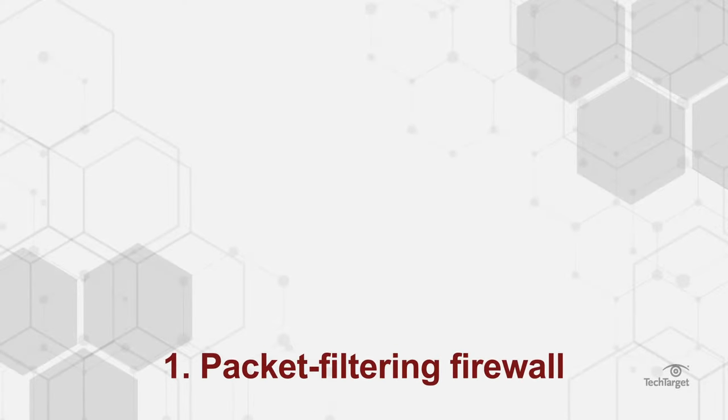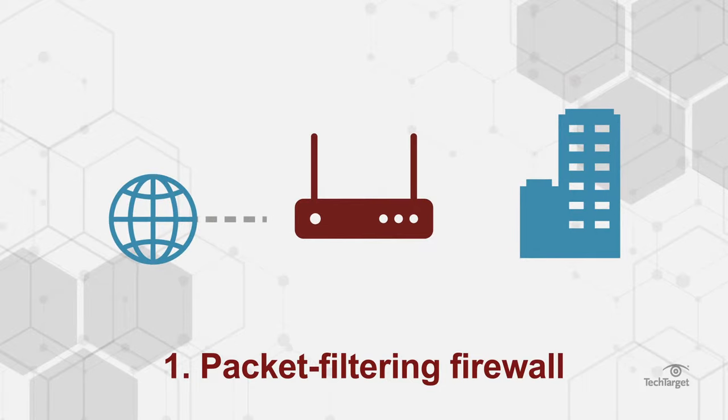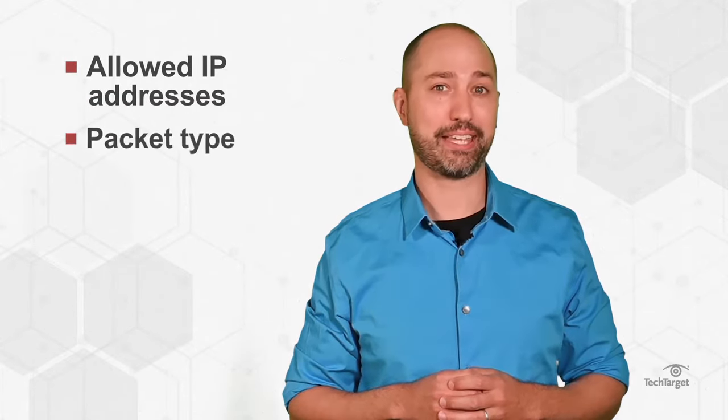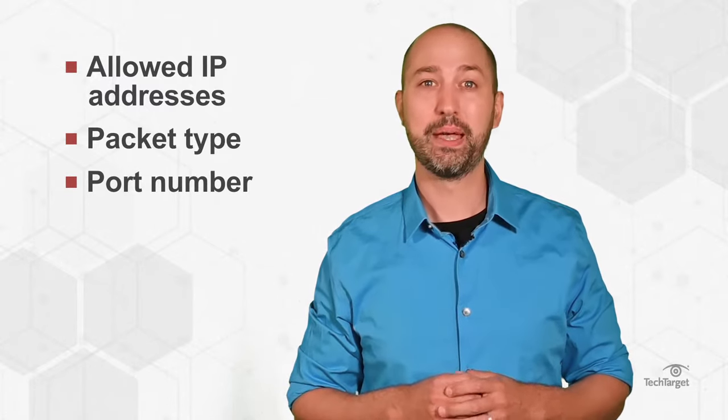Packet filtering firewall. These firewalls operate at points where devices like routers and switches work. They don't route packets, but instead compare each packet to a set of criteria, like allowed IP addresses, packet type, port number, and more. Packets that don't fit the criteria are dropped and not forwarded to the internal network.